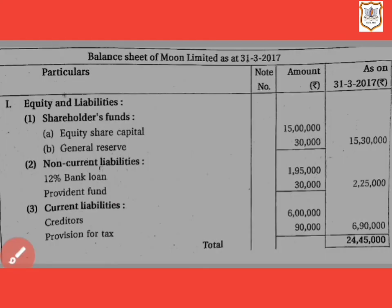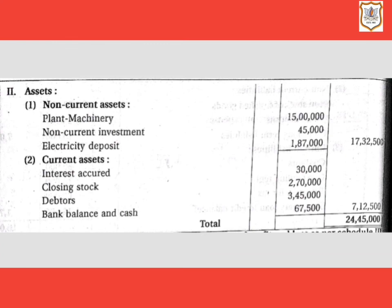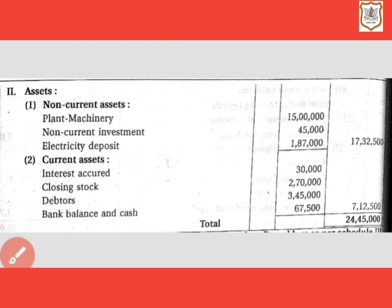On the assets side, total non-current assets is 17 lakh 32,500 and total current assets is 7 lakh 12,500, giving total assets of 24 lakh 45,000. So our total equity and liabilities equals total assets, confirming the balance sheet balances. That's all for today — I hope it is clear to you all. Thank you.